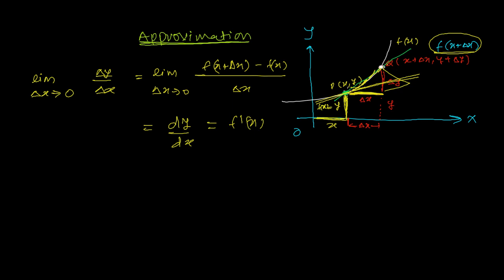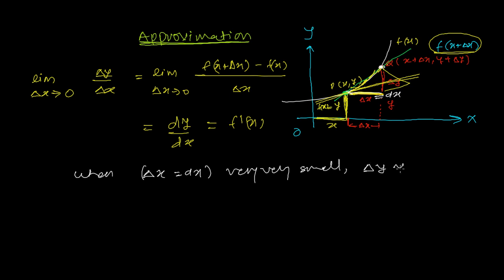Let me tell you one thing here. When Q approaches P, delta x tends to zero, and that delta x equals dx at that time. When this delta x, which equals dx, approaches zero and is very, very small, our delta y value is also approaching dy. So when limit delta x tends to zero — when this is very, very small — this delta x is getting shorter, and delta y is also getting smaller and smaller until that smallest value, which we call dy.